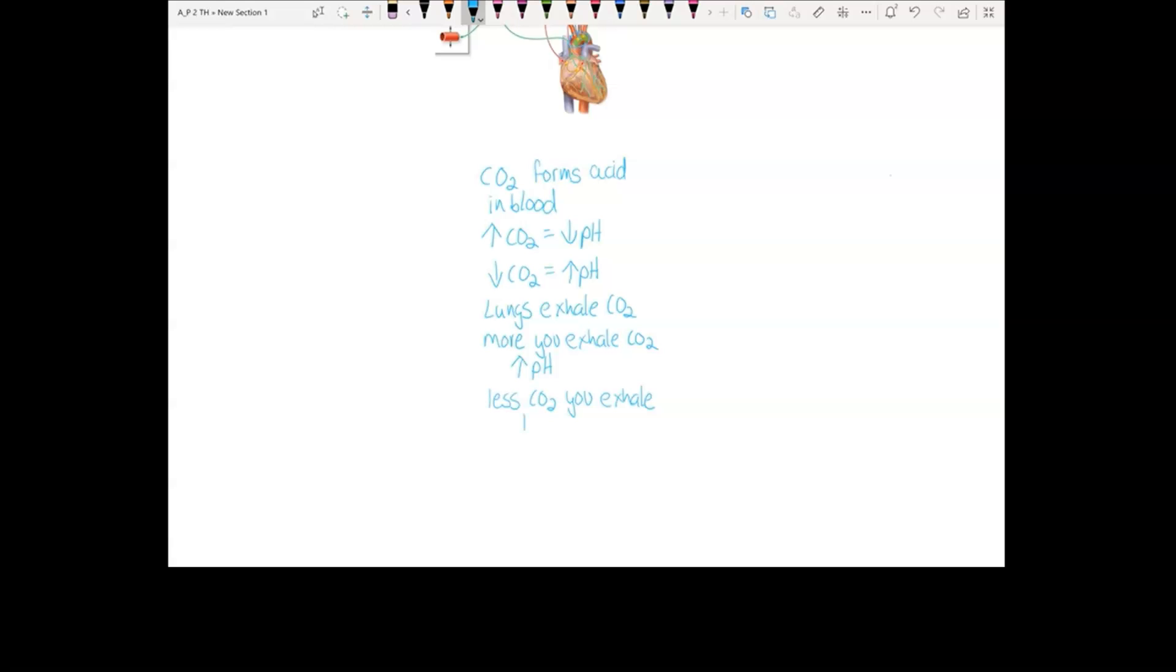The less carbon dioxide you exhale means you allow carbon dioxide to build up in the blood. Therefore, acid builds up in the blood and you reduce pH. These relationships between carbon dioxide and pH are important for understanding regulation of blood pressure.